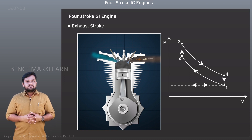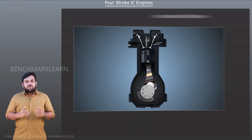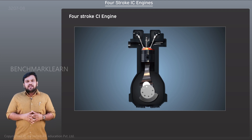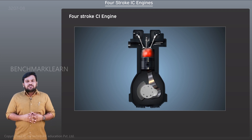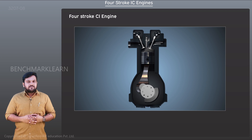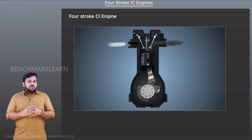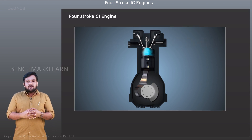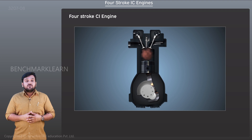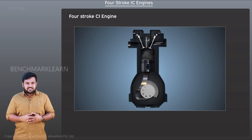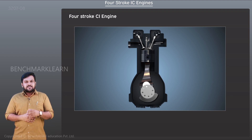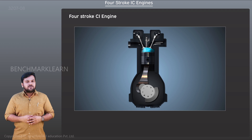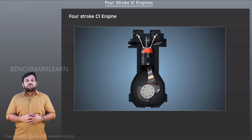Now let us look at the functioning of a four-stroke CI engine. A four-stroke CI engine has a similar mode of operation as that of a four-stroke SI engine, except for one key fact: spark plugs are not used for the combustion of fuel.